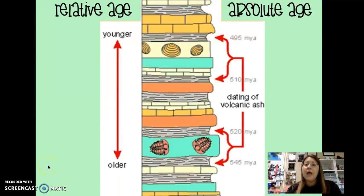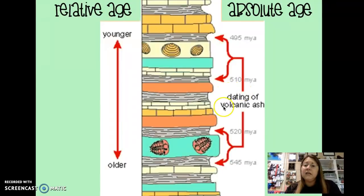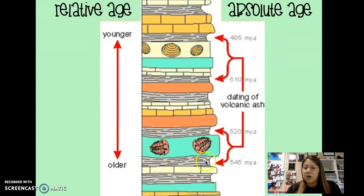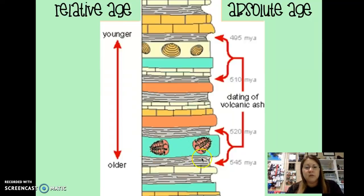Scientists can use absolute age and relative age to determine the age of rocks and fossils. Looking at a large sedimentary rock layer with nice stratigraphy, the dating of volcanic ash indicates the absolute age. For example, if we know the age of an extrusion — that igneous rock is approximately 545 million years — then we know that the trilobites had to have lived after that rock layer was deposited. So determining the absolute age of igneous rock helps figure out the age of other rock layers around it.